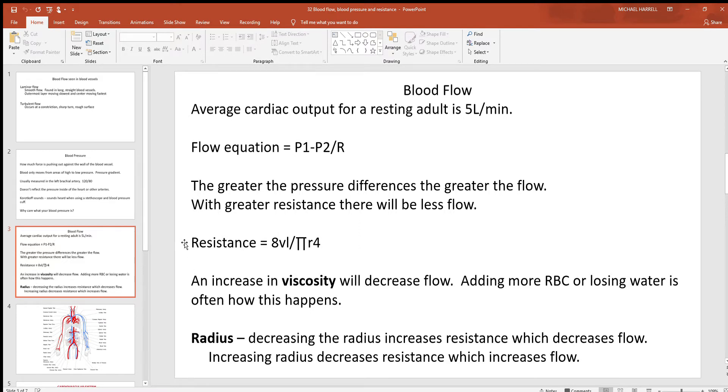So look at our resistance equation here. 8VL over pi R to the fourth power. Now we won't worry about the number 8. That's a constant. Of course, that's not ever going to change. V is viscosity. When you change the viscosity of the blood, you're talking about changing how thick it is. Thicker things have more resistance to flow. It's going to be harder to push them. So anytime you get an increase in viscosity of blood, there's going to be more resistance. And that means there's going to be less flow.